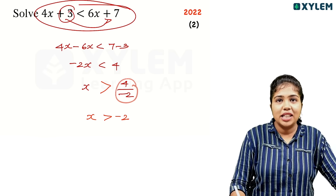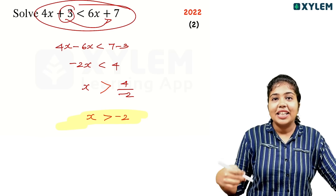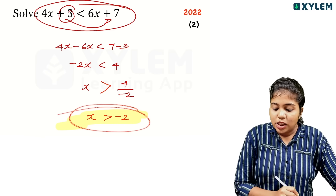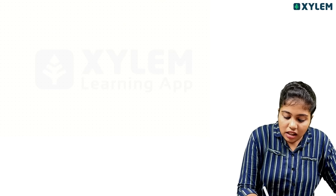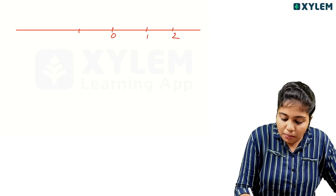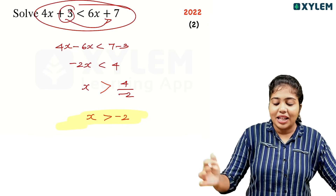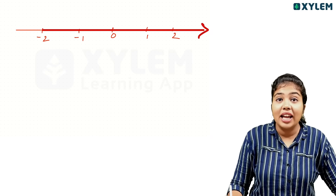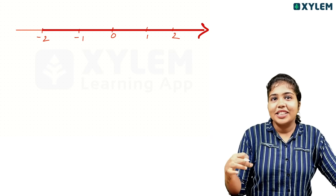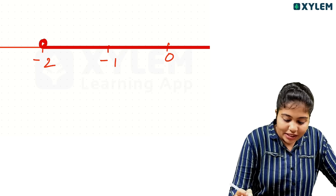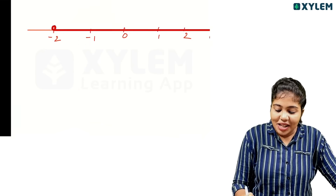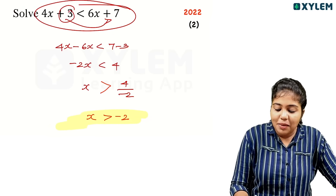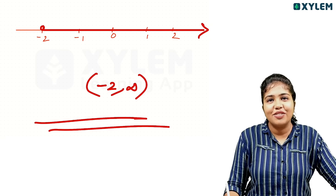The answer is x greater than minus 2. When we divide by minus 2, the inequality sign reverses — less than becomes greater than. So x is greater than minus 2. On the number line, minus 2 gets a hollow circle because it's strictly greater than. The interval is: open interval minus 2 to infinity.